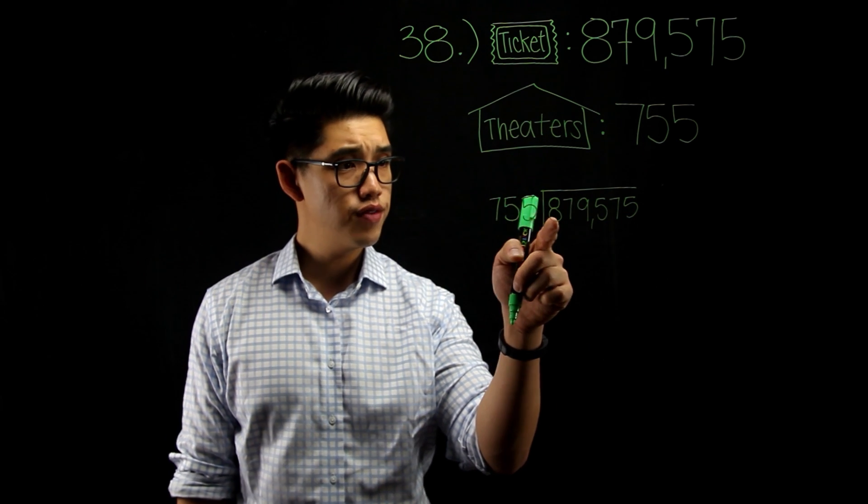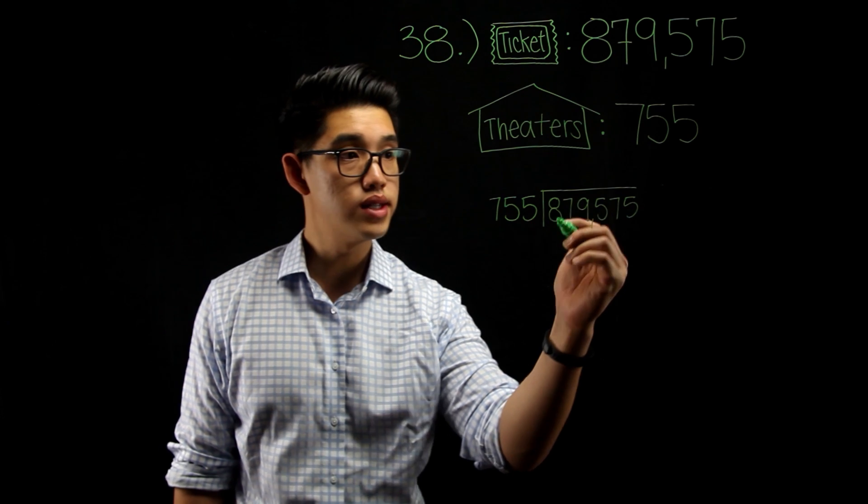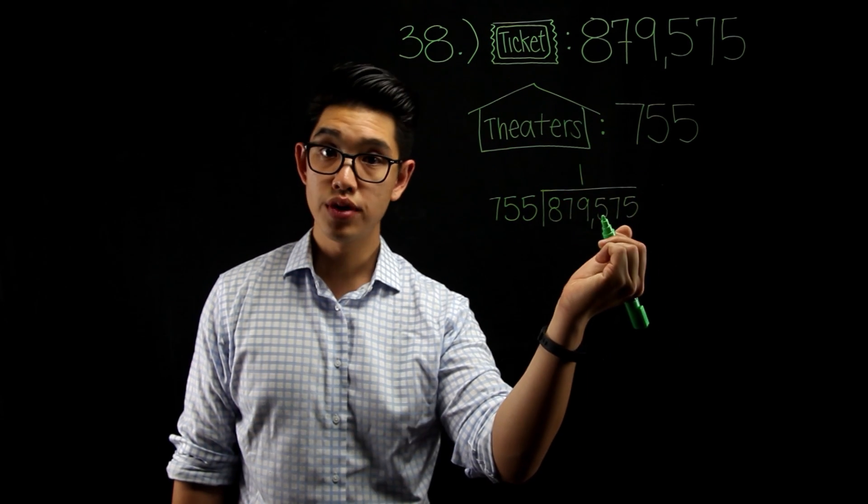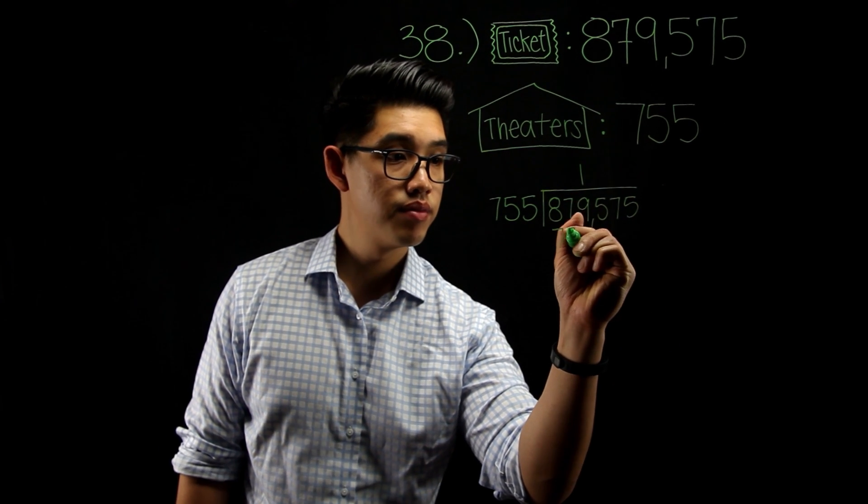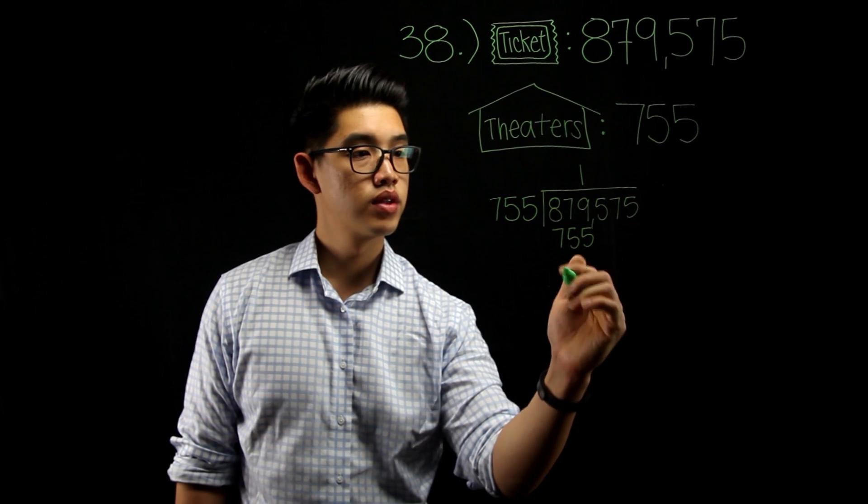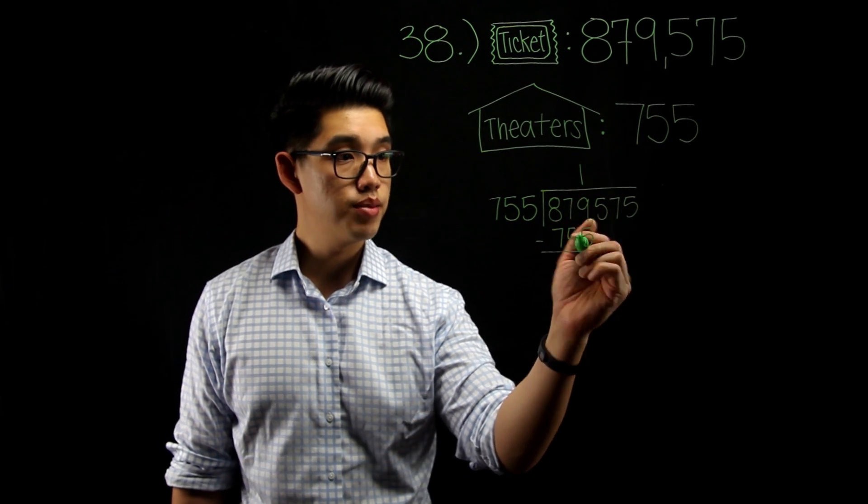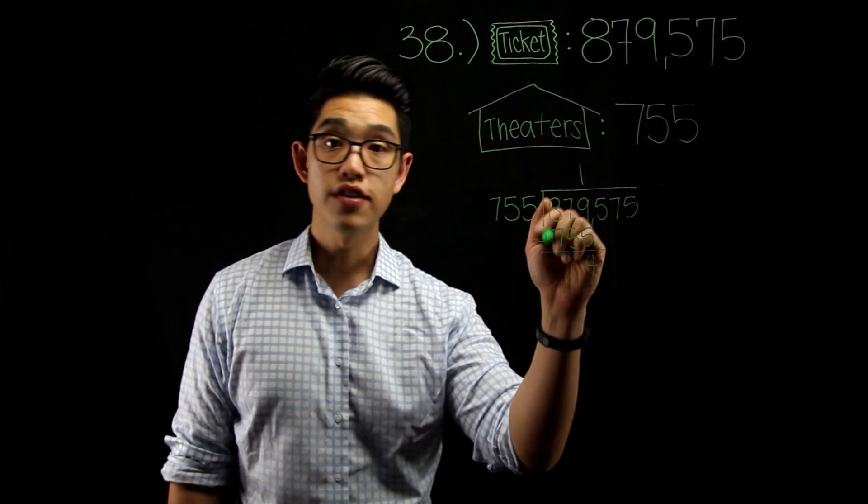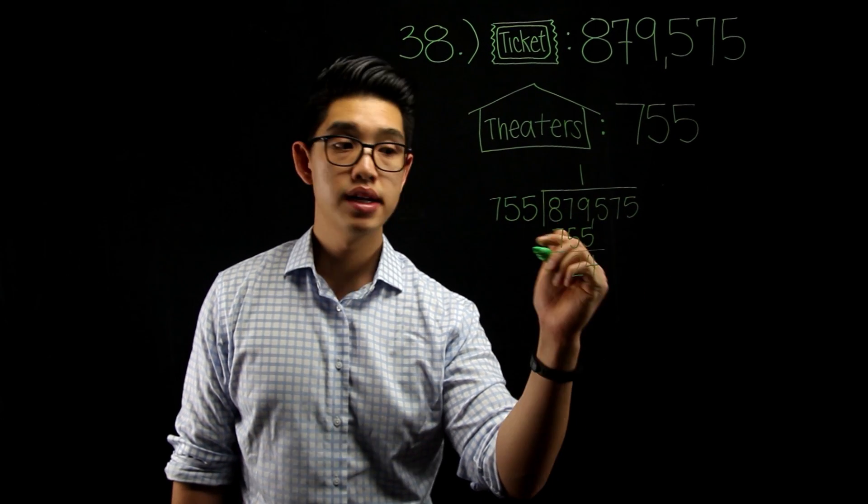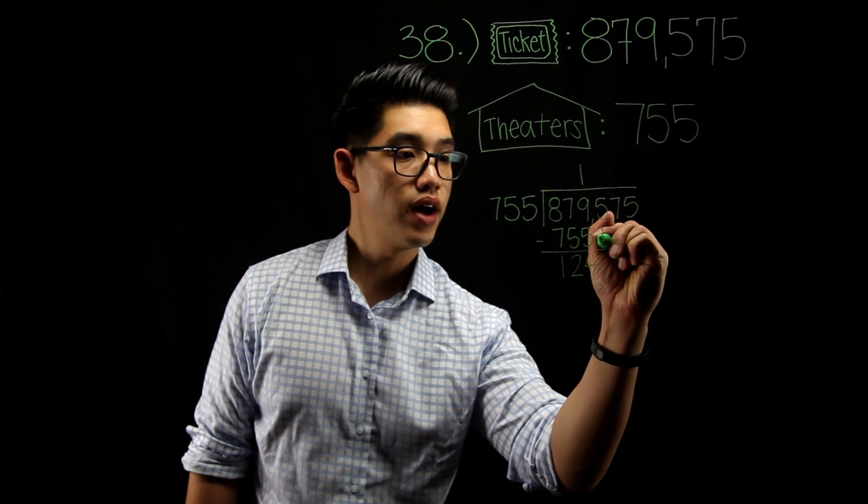Let's see. 755 goes into 879 one time. 1 times 755 is 755. We can now subtract. 9 minus 5 is 4, 7 minus 5 is 2, 8 minus 7 is 1. Drop down to 5.